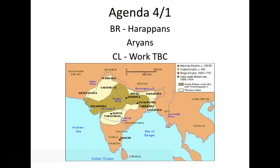All right, guys. Hi, hello. Welcome to our next learning objective for Unit 3. By this point, we have talked about all of the things that geographically impacted the people of India. Now we're moving on to those people — who settled in the subcontinent of India and what kinds of characteristics they have. We're going to talk first about the Harappans, and then we'll talk about the Aryans.